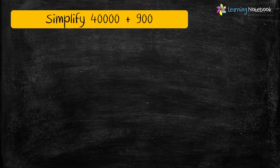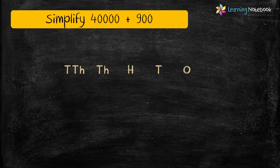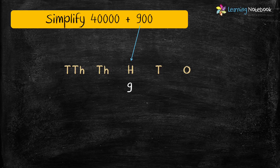Now let's solve the last question. Simplify 40,000 plus 900. Let's start solving this expanded form from the right. The first number is 900, which forms the digits at the 100's place. And the next number is 40,000, which forms the digit at the 10,000's place.